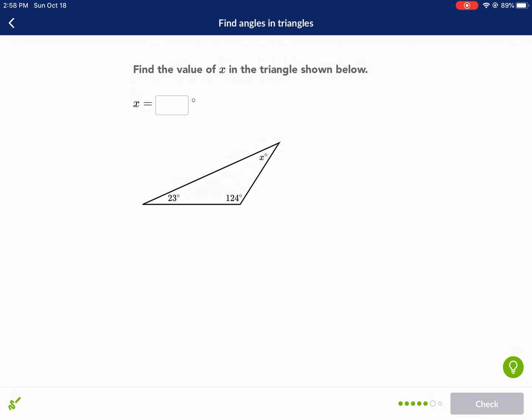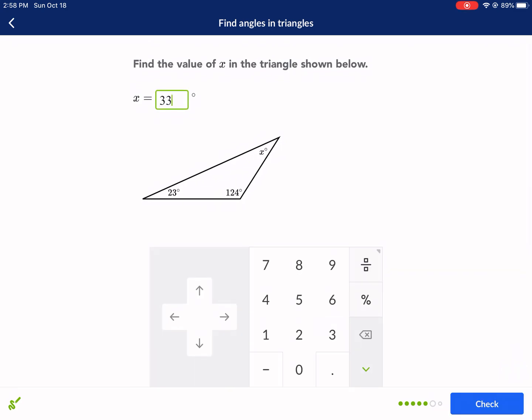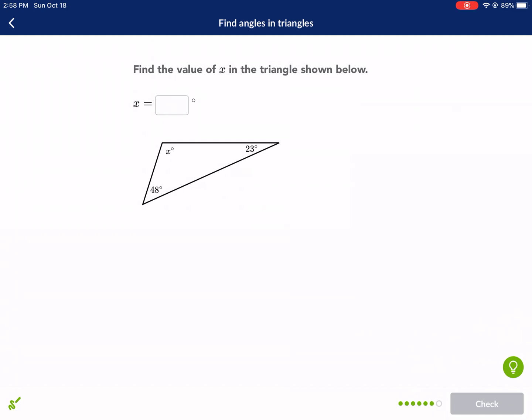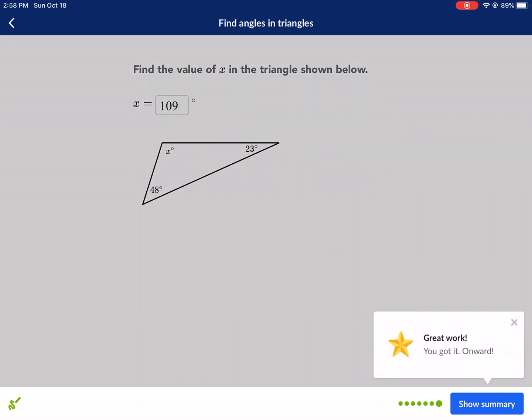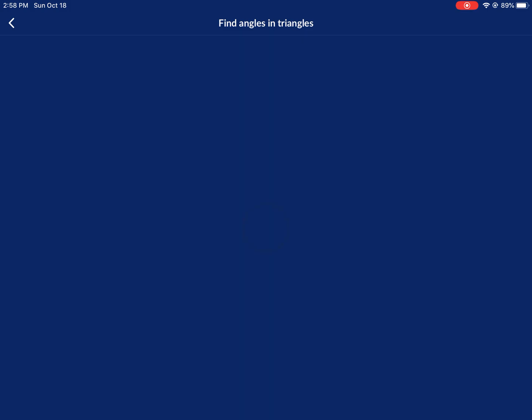Check it. This is going to be a short video. 180 minus 48 minus 23, that equals 109. All right, well that was a pretty easy one, but hopefully you'll hear this sound which is the sound of success.